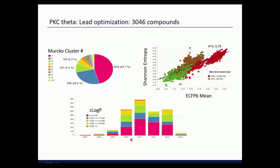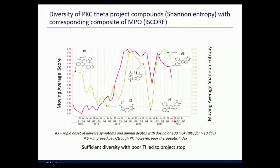What troubled me about this program — and troubles me generally about medicinal chemistry programs — is it took a long time to run. This slide shows the time period over which we ran it and the number of compounds generated in any particular year. We worked on multiple chemical series. I'm going to show some Shannon entropy calculations. If you're not familiar with Shannon entropy, there's a pretty good correlation between Shannon entropy and ECFP6 similarity scores.